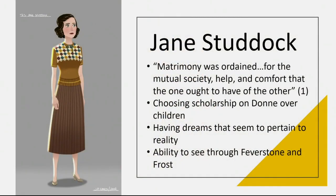Jane Studdock bothers many women readers for her portrayal of what it means to be a woman. She is said to be based on one of Lewis's students who was unhappy in her marriage and wrote letters to Lewis about her dissatisfaction. Lewis was amiable but held the line for what marriage should be. This was prior to his own marriage—written in 1945, Lewis would not marry for almost two decades. He had few women friends at this time, beginning his correspondence with Dorothy Sayers only in 1942.